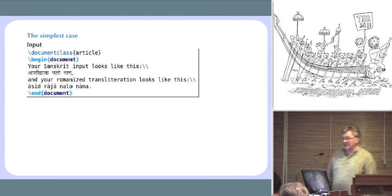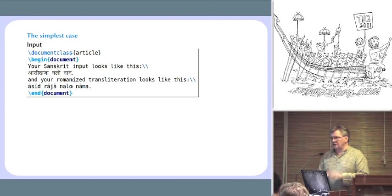So I would like to give you an example here of the simplest case. Let's begin input here with document class, begin document, end document, and in the middle, we've got some Sanskrit that looks like this, which is just, I'm writing with a Unicode editor, and I'm assuming that we've solved all the problems about typing. I use Ubuntu, people with Windows and other, all sorts of different ways of having keyboard handlers.